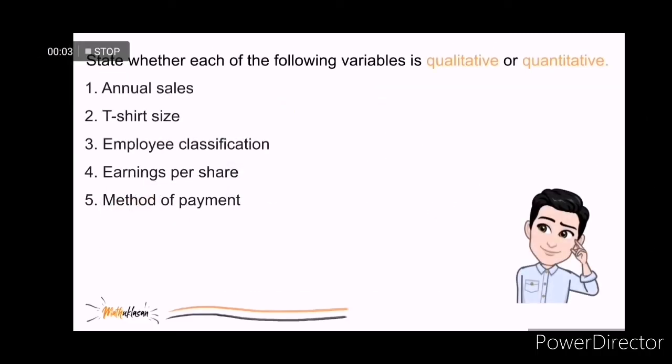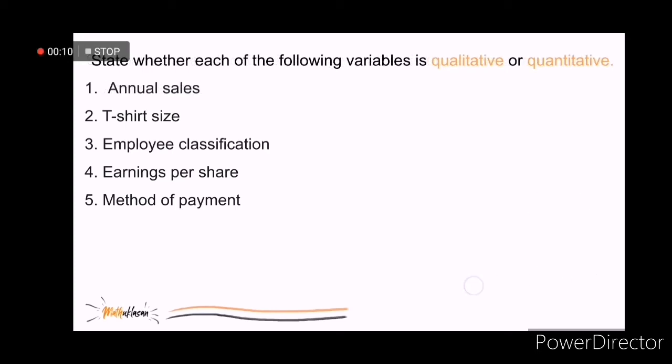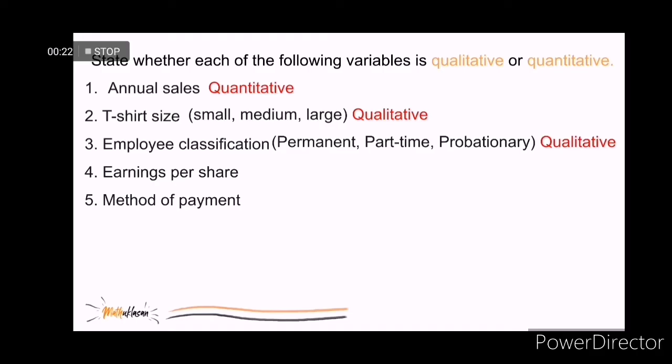State whether each of the following variables is qualitative or quantitative. Annual sales is quantitative. T-shirt sizes like small, medium, and large are qualitative. Employee classification like permanent, part-time, probationary are qualitative. Earnings, again like the annual sales, are quantitative. Lastly, the method of payment like cash, checked, and credit card are all qualitative.